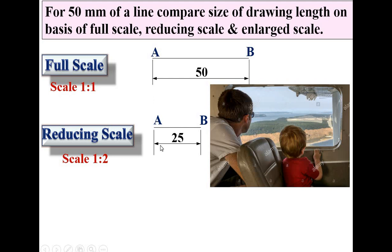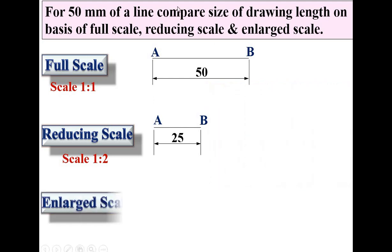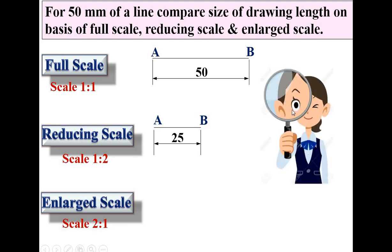Now third scale, enlarged scale, and I have written the scale as 2 is to 1. That means I have increased the size of the object as double, means you are looking at the original object with magnifying glass. This scale is basically used for very small elements. Here I have written 2 is to 1, that means original size of the object is doubled by magnifying glass. So what is your original size? 50.